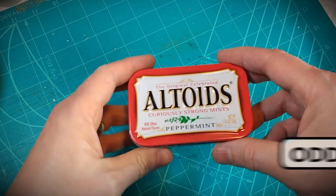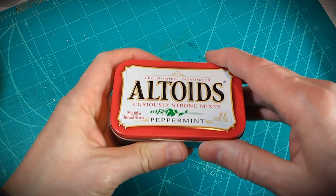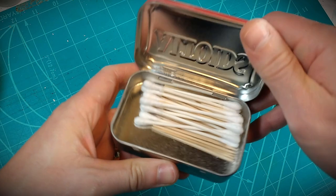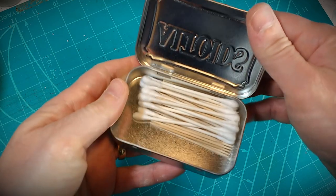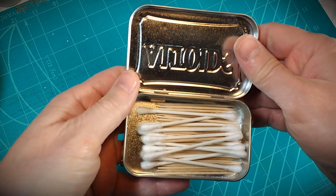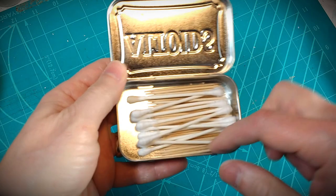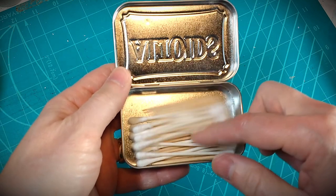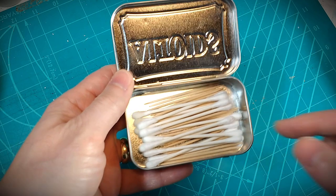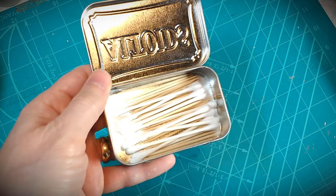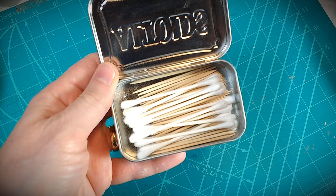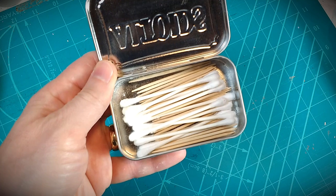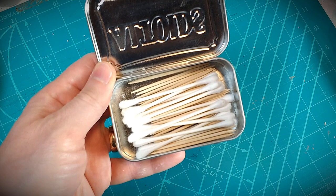In my odds and ends category is Altoids. Altoids are good, but what I keep in here are like Q-tips and toothpicks. These are things that various projects I'll go through quite a few. So just having a little tin like this handy to get to the Q-tips for cleaning up stuff, toothpicks for mixing things or applying real fine areas some of the epoxy resins and whatnot. It's just something handy to have at your workspace.